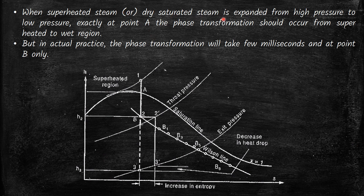When superheated or dry saturated steam is expanded from high pressure to low pressure, exactly at point A the phase transformation should occur from the superheated to the wet region. At point A, when the steam reaches the saturation condition, condensation should happen. But in actual practice, the phase transformation will take place a few milliseconds later at point B. Because the fluid velocity is very high, it passes the saturation temperature quickly, and the phase change cannot happen at the same pace as the fluid velocity. That is why condensation happens at a lower temperature than the actual saturation temperature corresponding to the pressure.